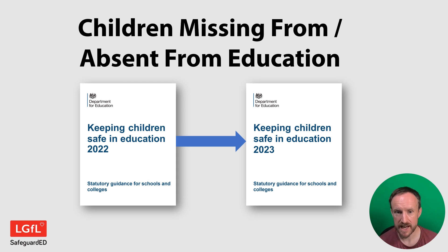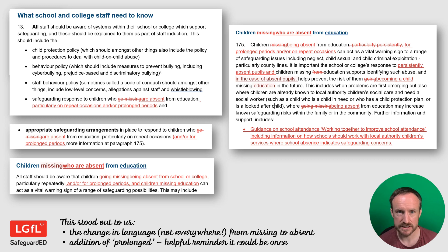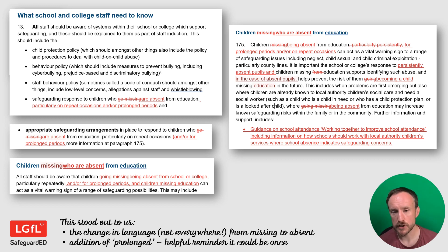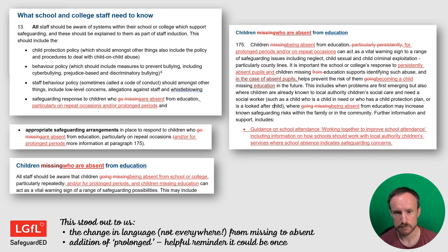Let's move on to some of the other areas. Beyond filtering and monitoring, there have not been major changes to KCSIE, but there are a few things worth looking at. Children missing from education — or children absent from education — there have been some terminology changes, though not everywhere, and both terms are now being used. They've also added in a couple of places the word 'prolonged', meaning it's not just repeat issues of not being in school, but it could be the first absence when that's particularly long — something worth thinking about and taking action on.